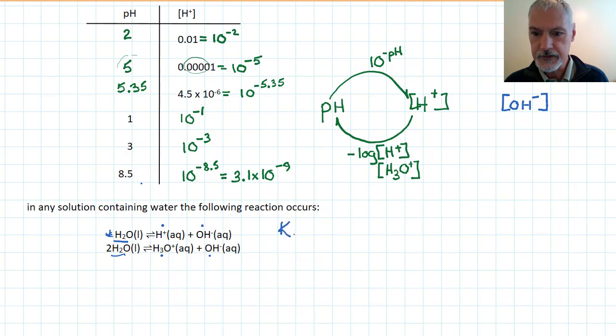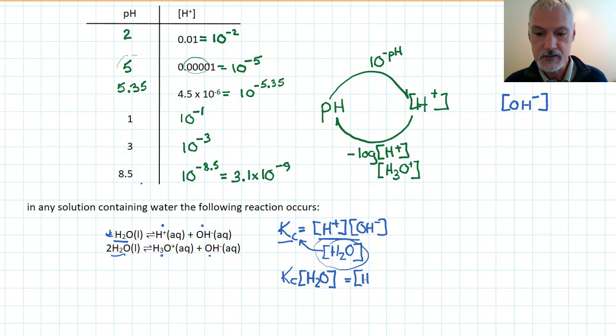The equilibrium constant for this reaction, K, would be the concentration of the hydrogen ion times the concentration of OH ion, divided by the concentration of water. Now the concentration of water itself is a constant, meaning it doesn't change. So I can blend that constant together with the equilibrium constant. And that then gives me Kc times the concentration of H2O equals the concentration of the hydrogen ion times the concentration of the OH ion.